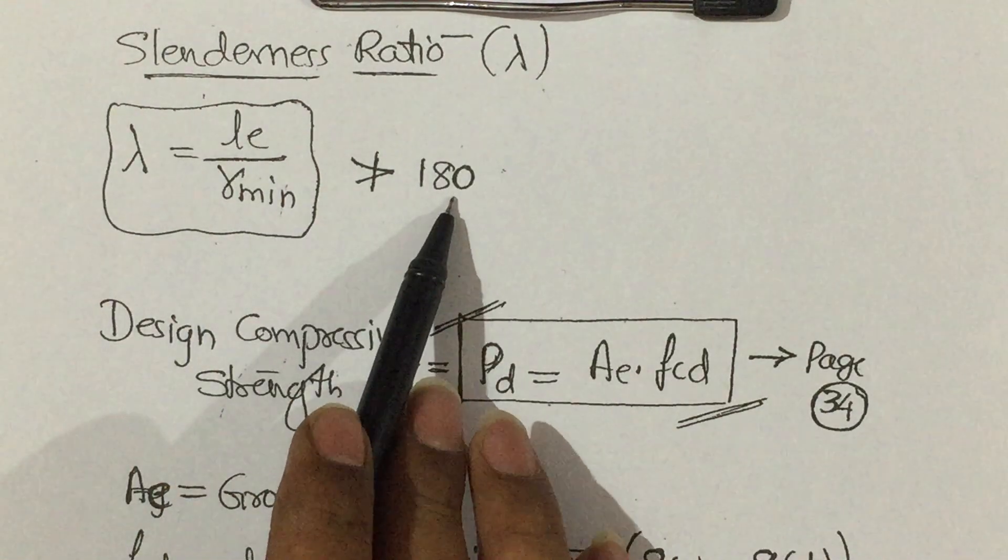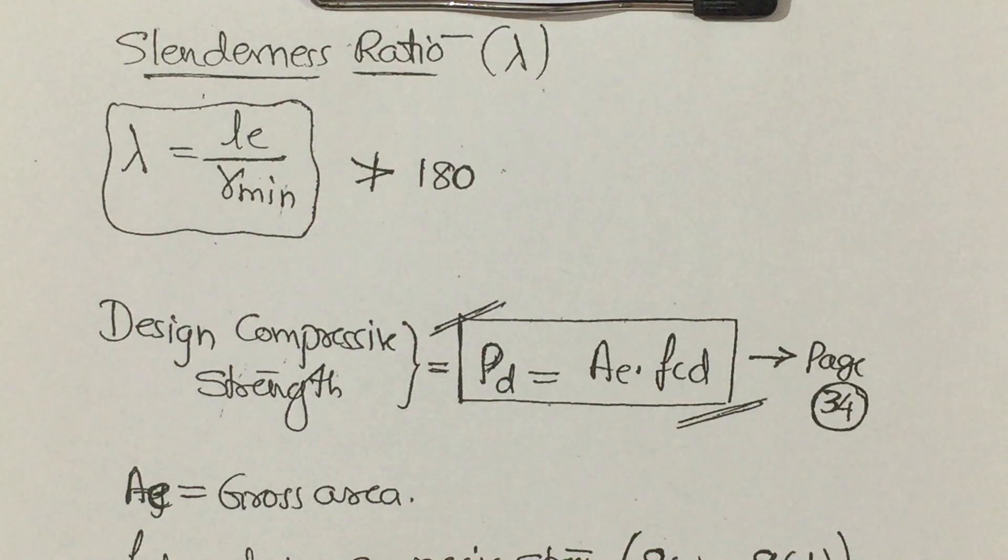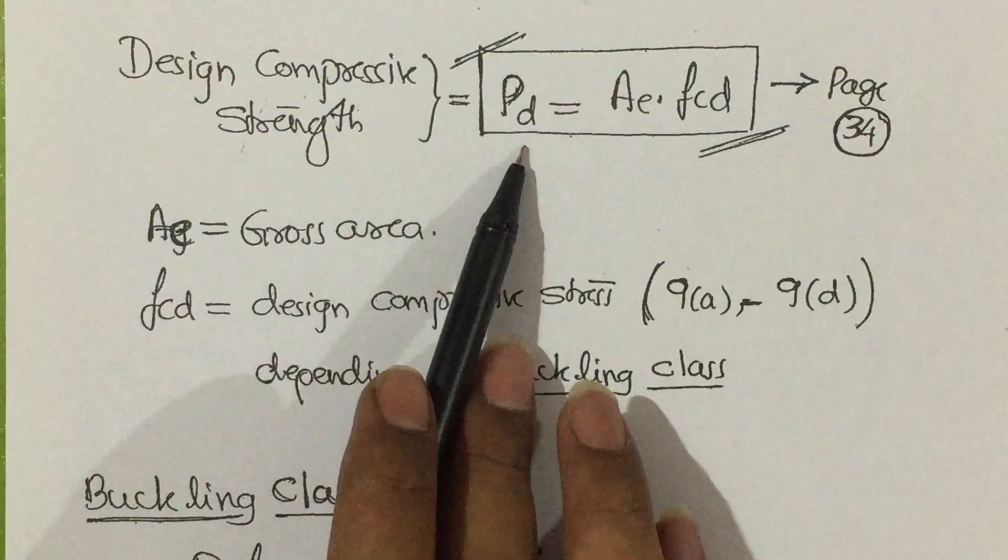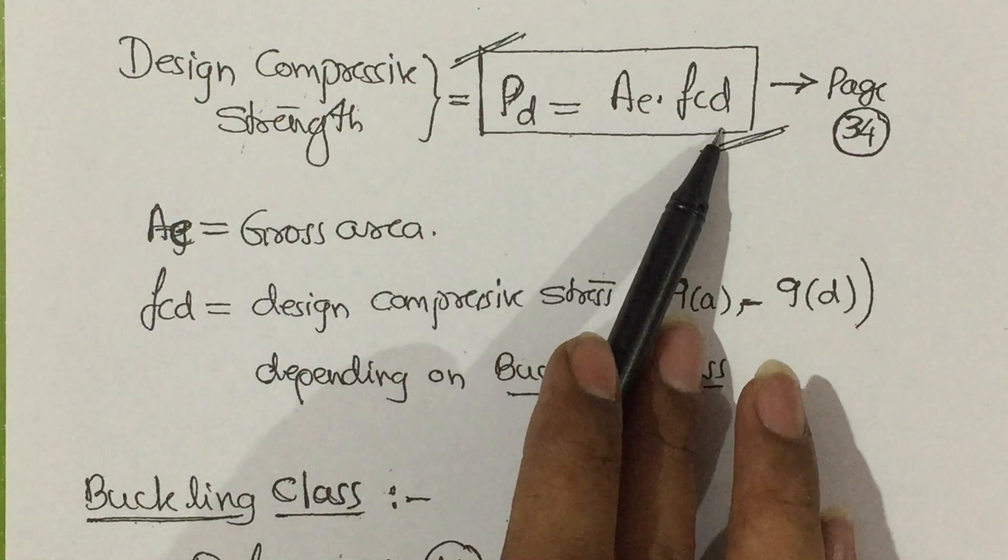Then design compressive strength, pd, is given by ae into fcd. It is given in page number 34.